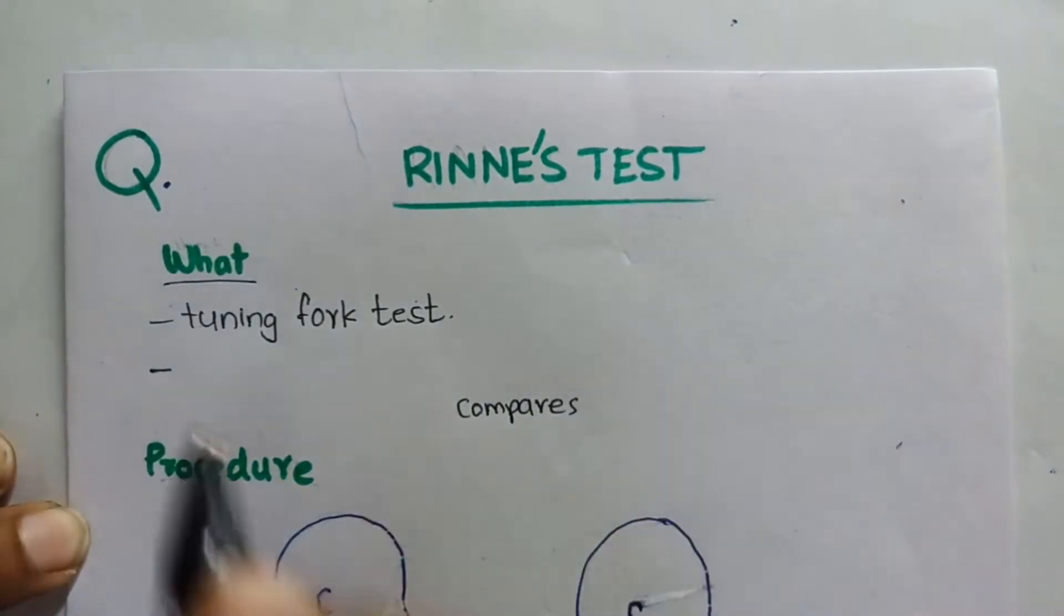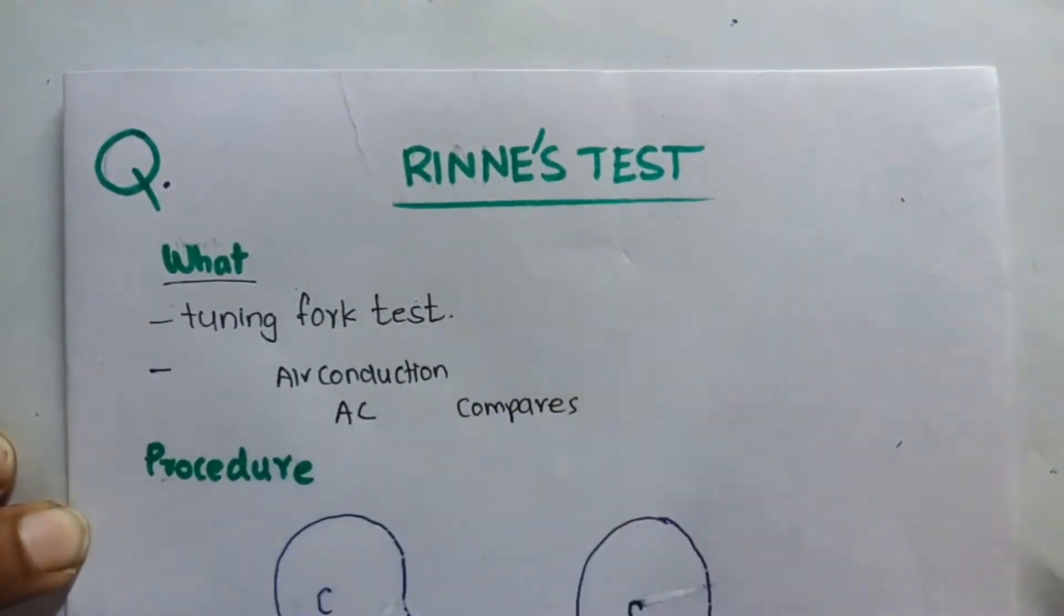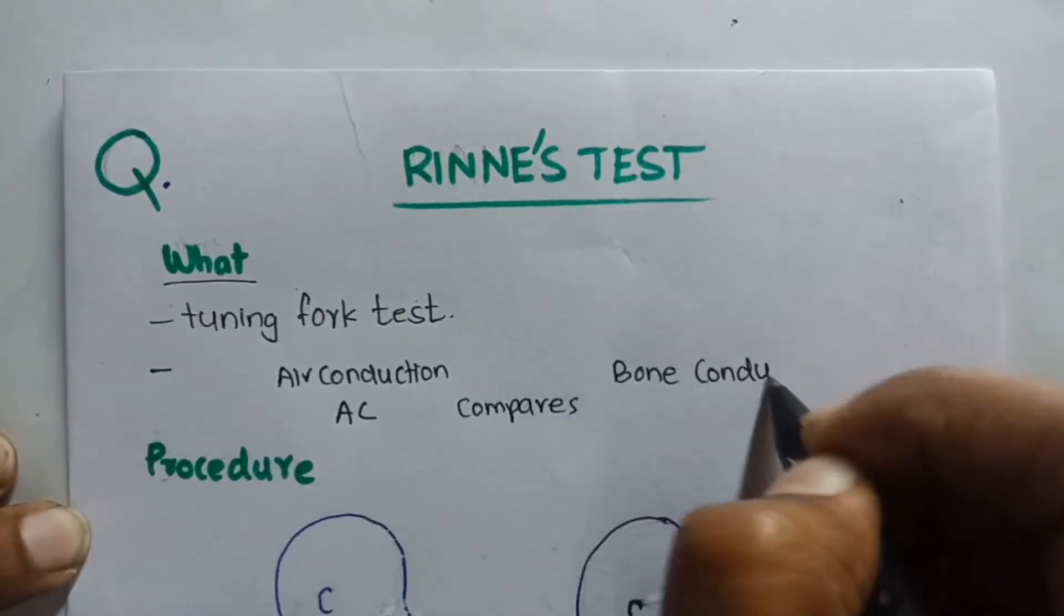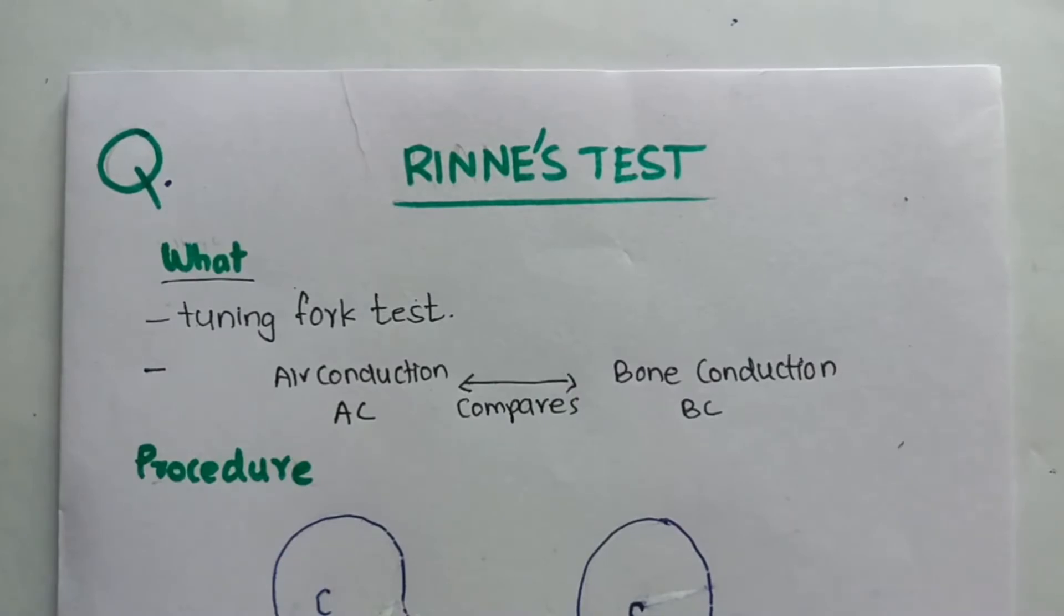It is a tuning fork test where we compare the air conduction, that is AC, with that of bone conduction or BC. So it is a comparison between them.